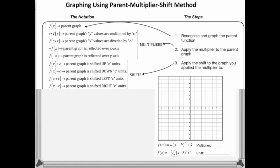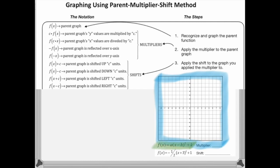There's a lot of information here. What we're doing is taking a parent function and putting it on the graph. Then we're going to take a look at a set of instructions that are going to help us move that parent function around the graph — make it wider or narrower, flip it upside down, and so on. Let's do the parabola example first because we're most familiar with it, and then we'll move on to the others.